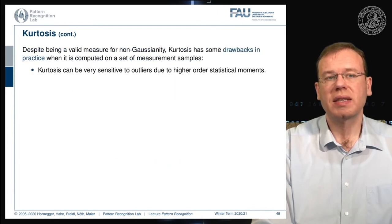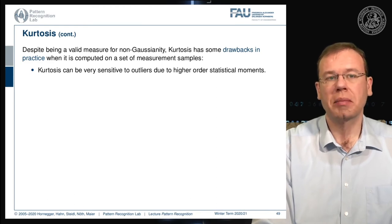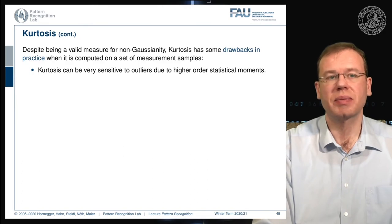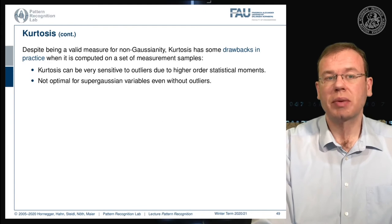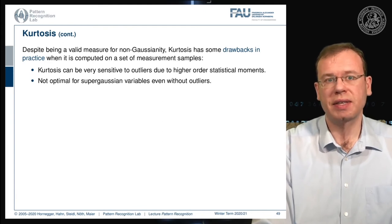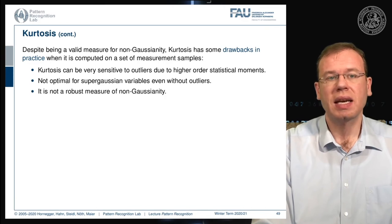Kurtosis is a valid measure for non-Gaussianity, but it has drawbacks in practice — especially when computed from measurement samples. Kurtosis can be very sensitive to outliers due to its higher-order statistical moments. It is also not optimal for super-Gaussian variables even without outliers, and is not a robust measure of non-Gaussianity.